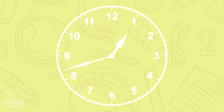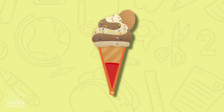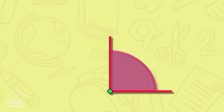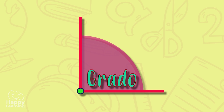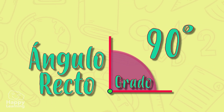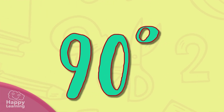If you look around, we are surrounded by angles — like the ones the clock hands or an ice cream cone make. The unit of measure of angles is the degree. The most important angle of all is the right angle, and it measures 90 degrees. The tiny symbol you can see in the upper part of the number 90 represents all angles.